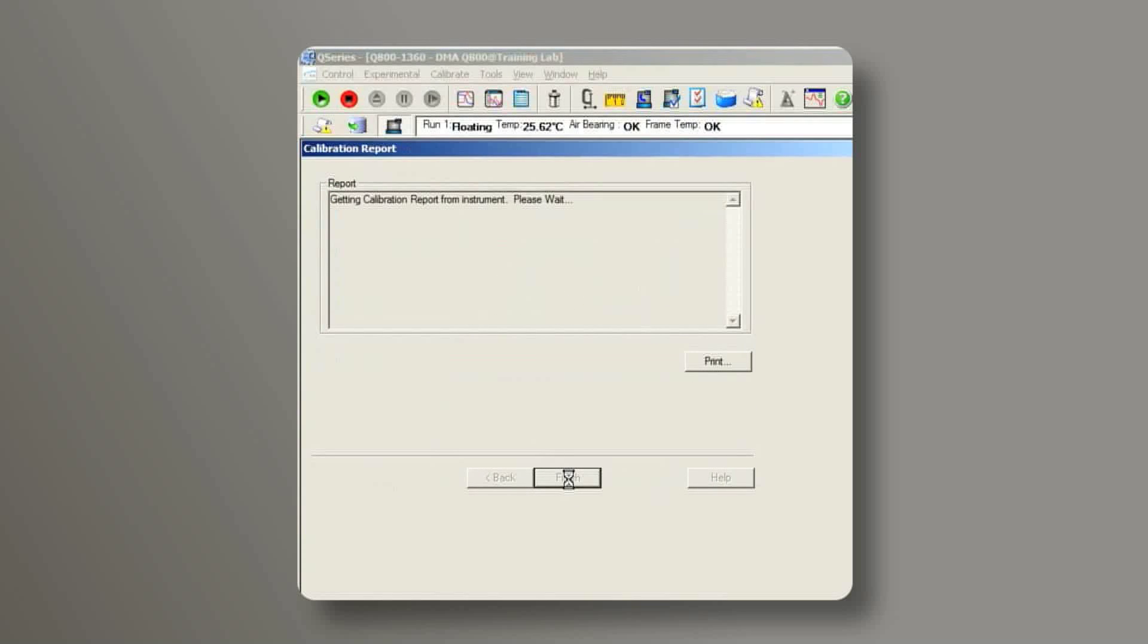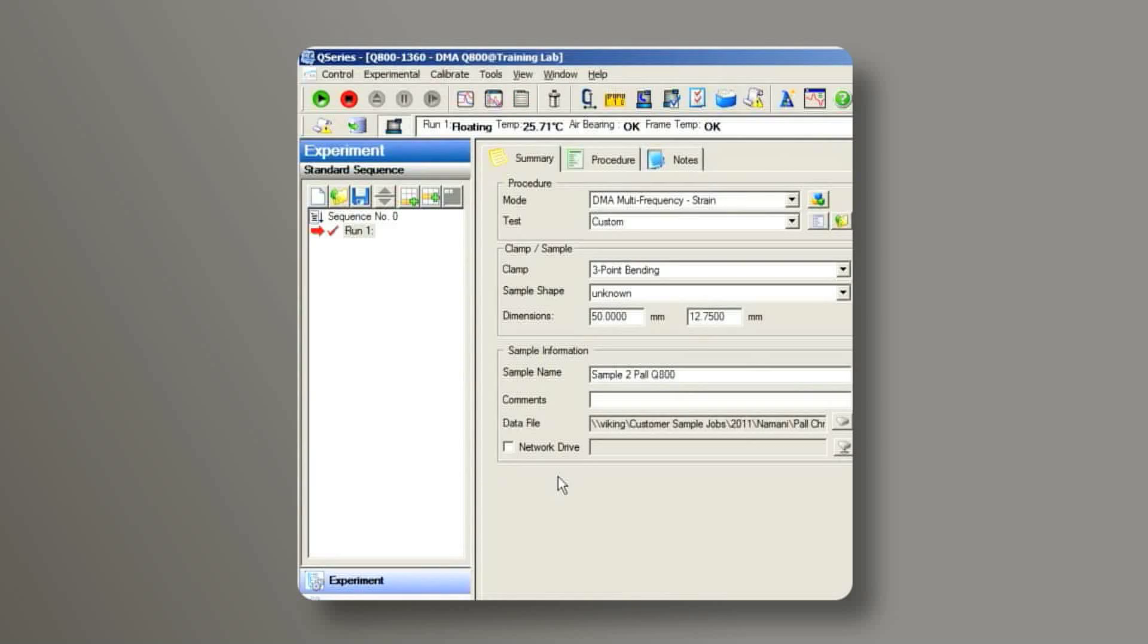After the calibration, check the report. Make sure the clamp compliance value is lower than the maximum value shown on the right side of the screen. You have now finished the 3-Point Bending Clamp calibration.